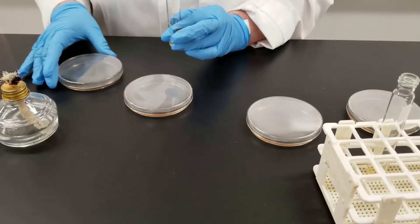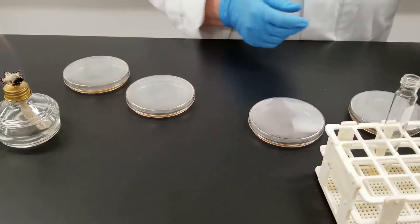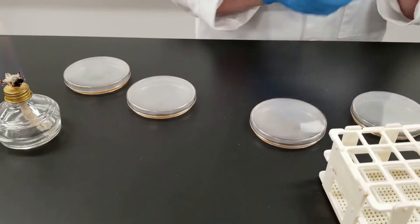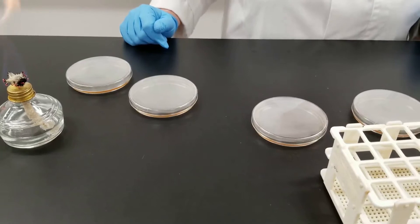Swirl this last plate, and like I said, we'll set these aside, let them solidify. When it is done, then we will incubate them - always incubate them inverted. We'll incubate at 37 degrees for 24 hours and then come back and look at them.